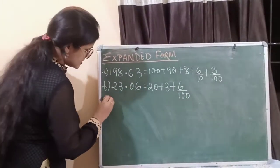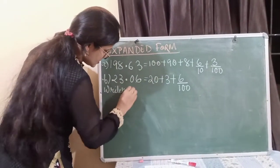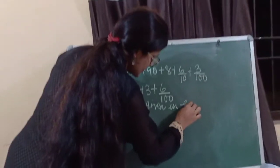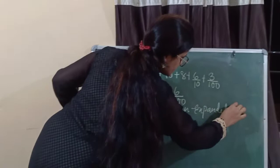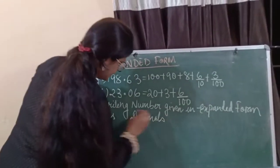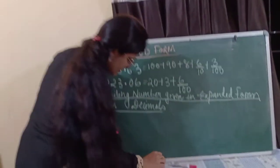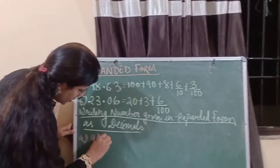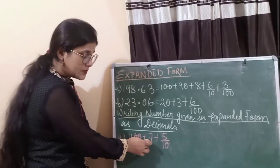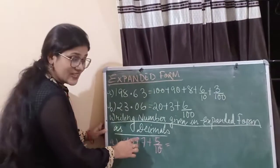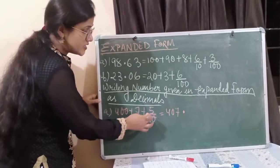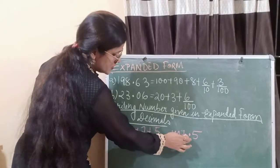Next is writing a number given in expanded form as a decimal. Let's see an example. Number A: 400 plus 7 plus 5 by 10. As you can see, 400 and 7 are the whole number parts. The number in the 10s place is missing, so we will write the number as 407.5.